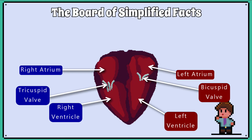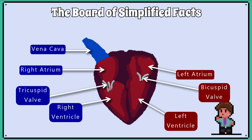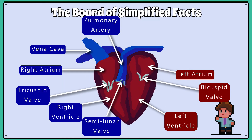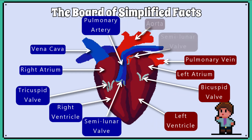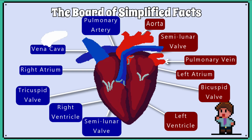The vein coming from the body and into the right atrium is called the vena cava. The artery leaving the right ventricle is called the pulmonary artery and it has a semi-lunar valve. The vein coming back to the left atrium is called the pulmonary vein. The artery leaving the left ventricle is called the aorta and has a semi-lunar valve too.